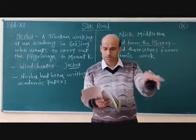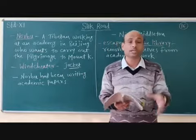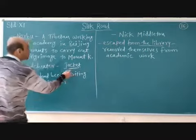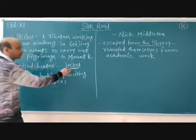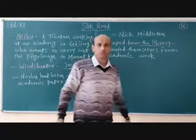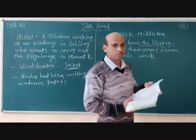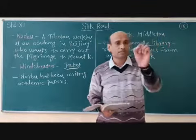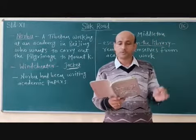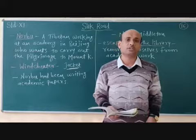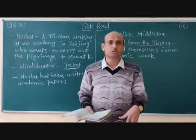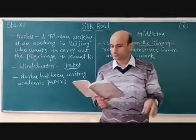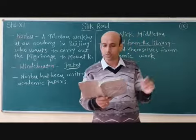Norbu was wearing a windcheater — a windcheater is a kind of jacket — and western-style spectacles. So that is why the narrator assumed that Norbu was not from the same region or area.